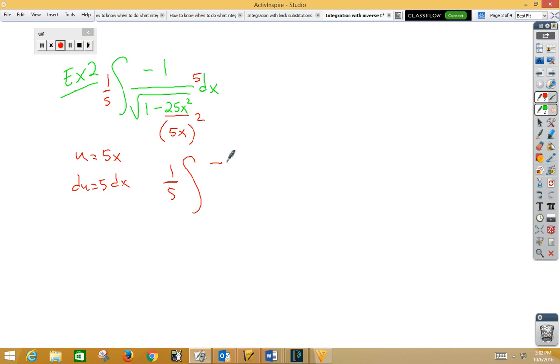1 fifth integral, negative 1 over root, 1 minus u squared, du. That would be inverse cosine. So I have 1 fifth inverse cosine of 5x plus c.